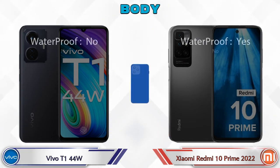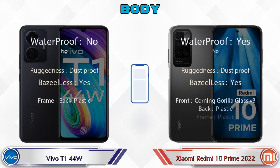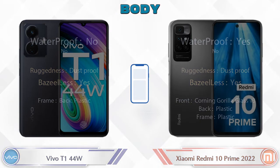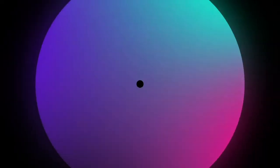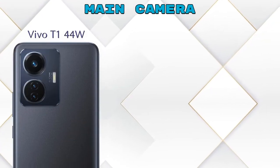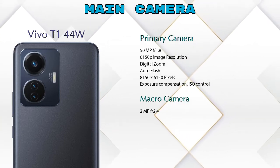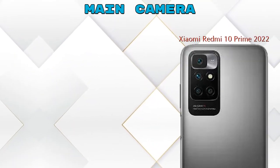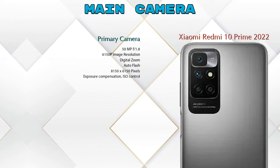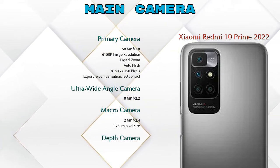Let's see the complete details about the body of both phones. Now let's look at our favorite feature: the camera. For the rear camera, the T1 44W has three cameras — a primary camera, a macro camera, and a depth camera. The 10 Prime 2022 has four cameras — a primary camera, an ultra-wide angle camera, a macro camera, and a depth camera.